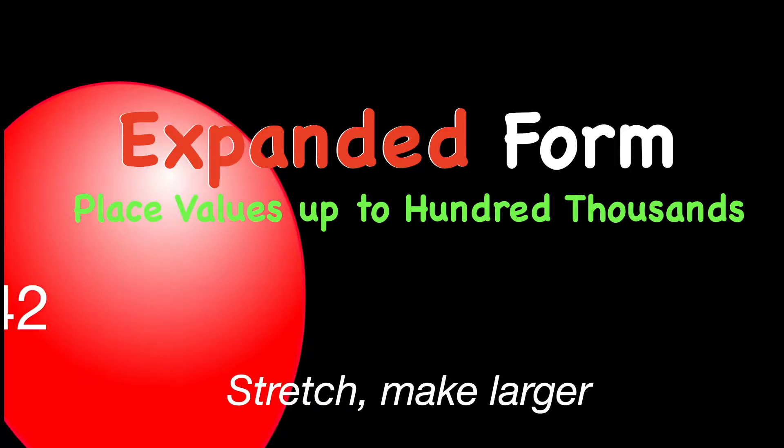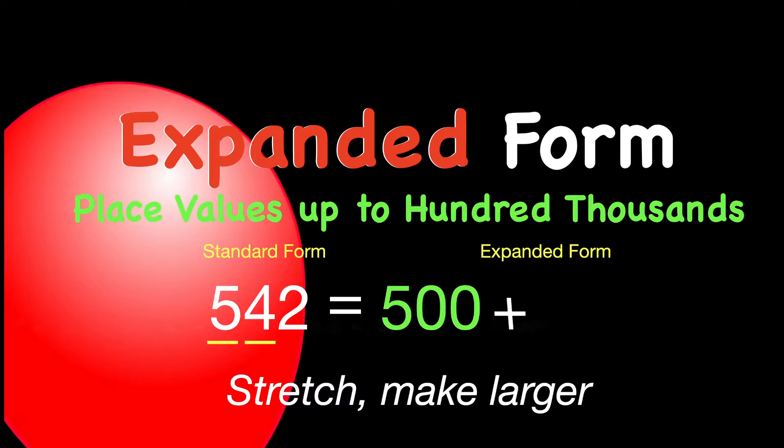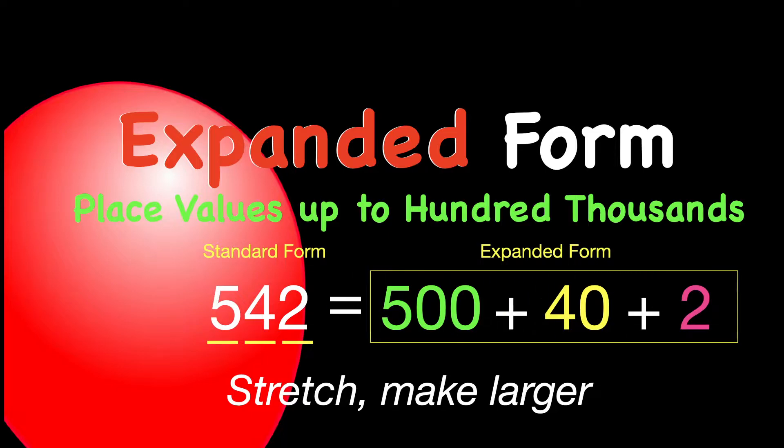Expanded form in math is when we have a number, for example, 542, and we want to make it larger. Right now, that number 542 is in standard form, and we want to turn that and make it bigger into something called expanded form. How we do that is we take each digit, for example, the 5 really has a value of 500. The 4 is 4 tens, or 40, and then the 2 ones is just the 2. The 500 plus 40 plus 2 is in expanded form, so that's the kind of thing that we're doing today.